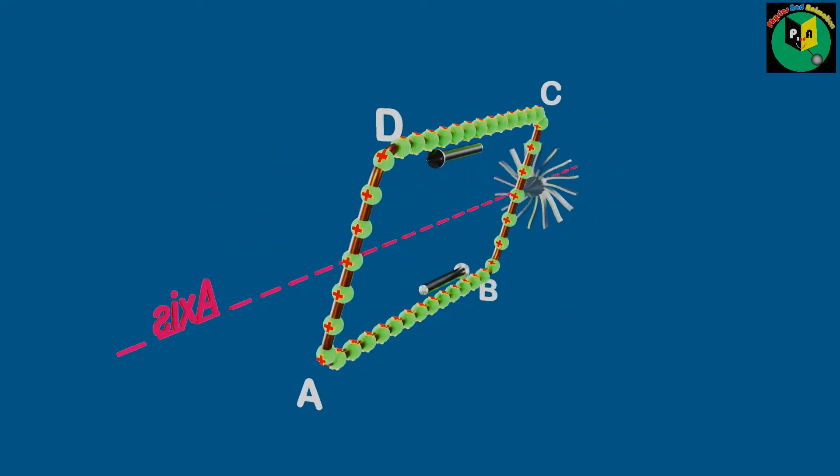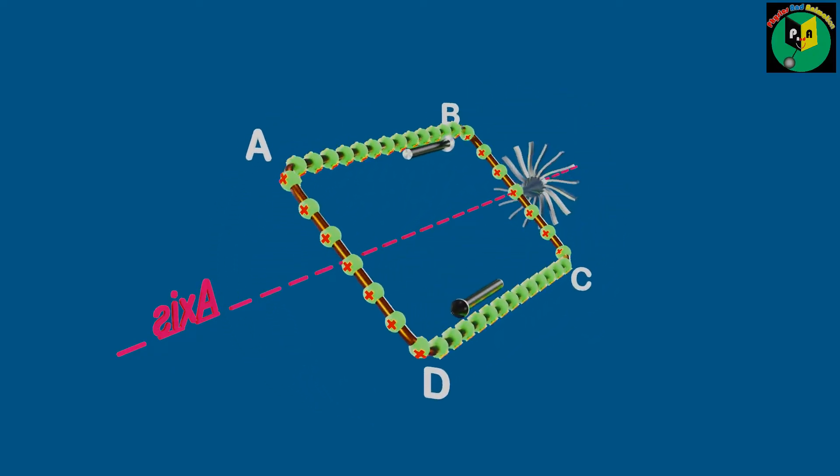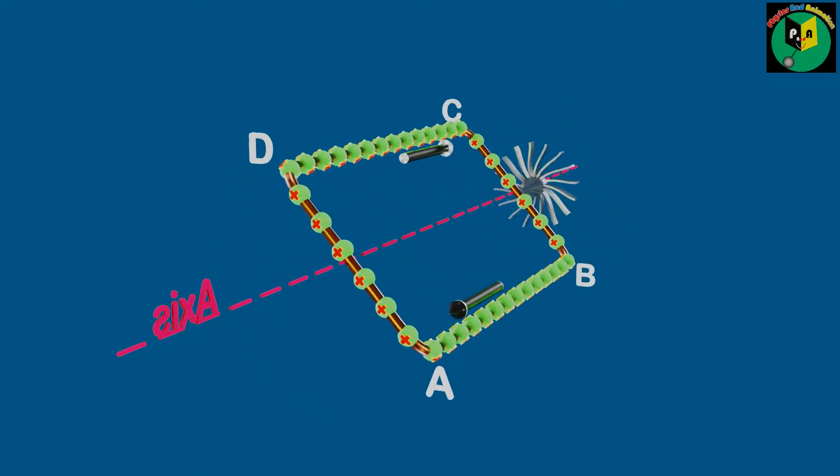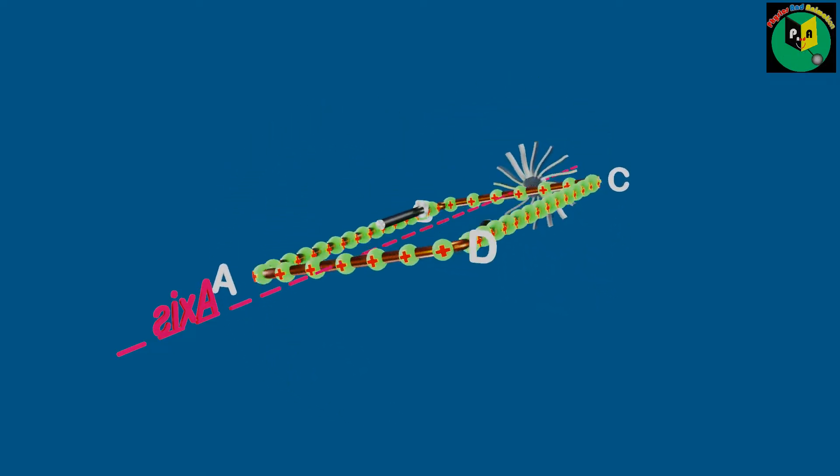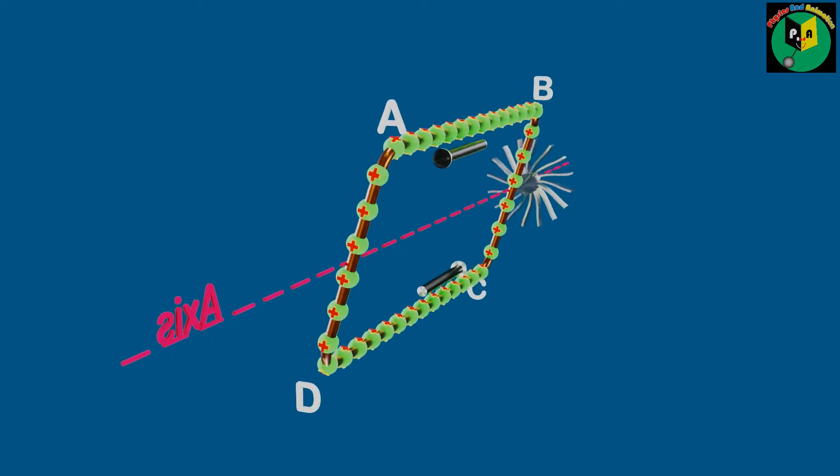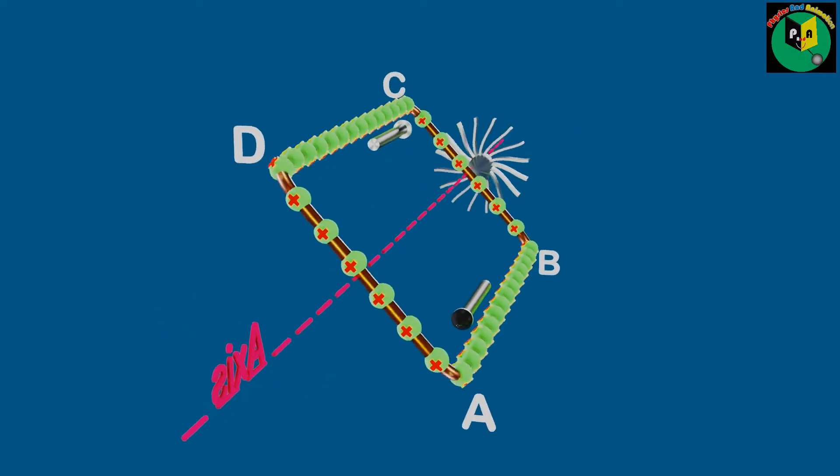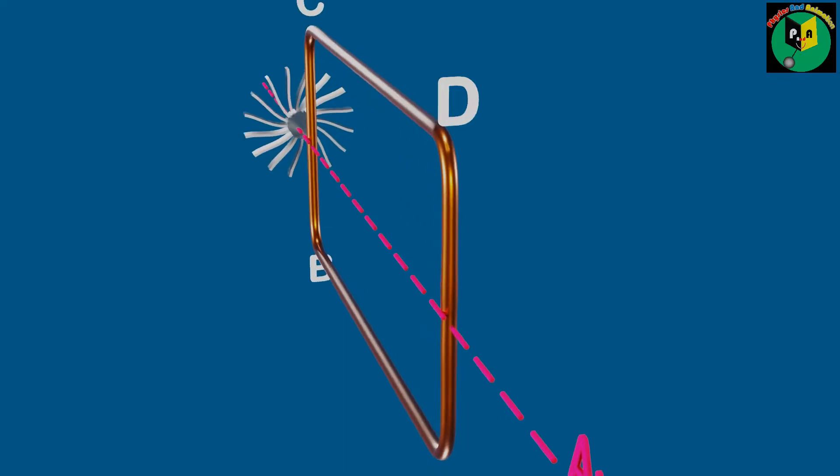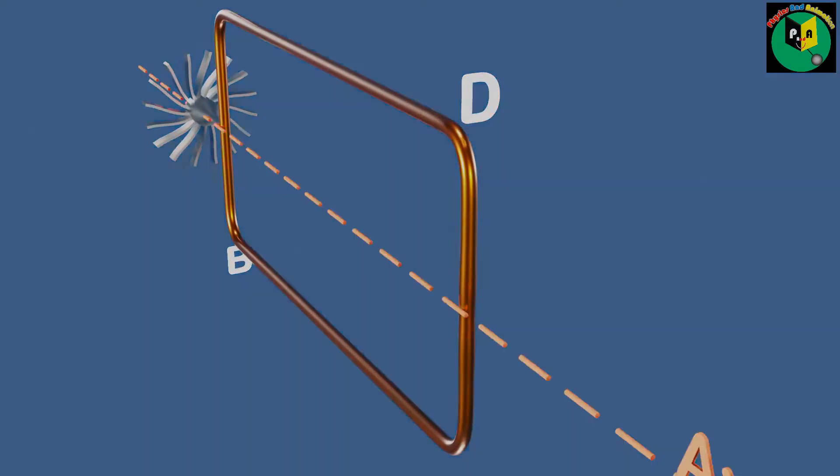So, now we are changing EMF and current, whose direction reverses after every half of the rotation. But the question arises, how can we use this alternating current without interfering with the rotation of the coil?